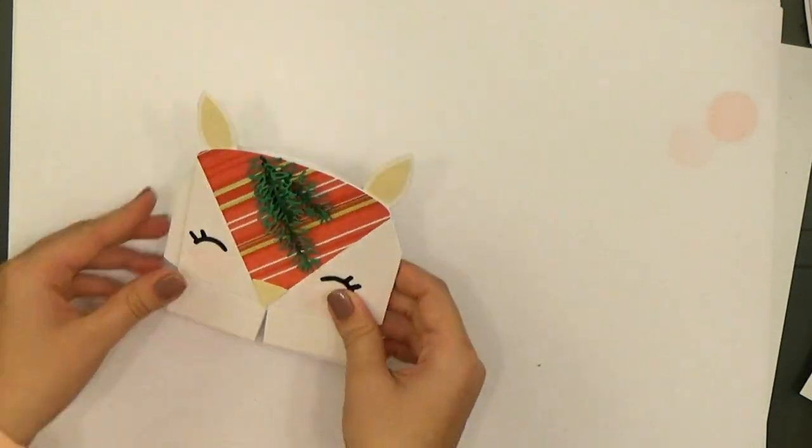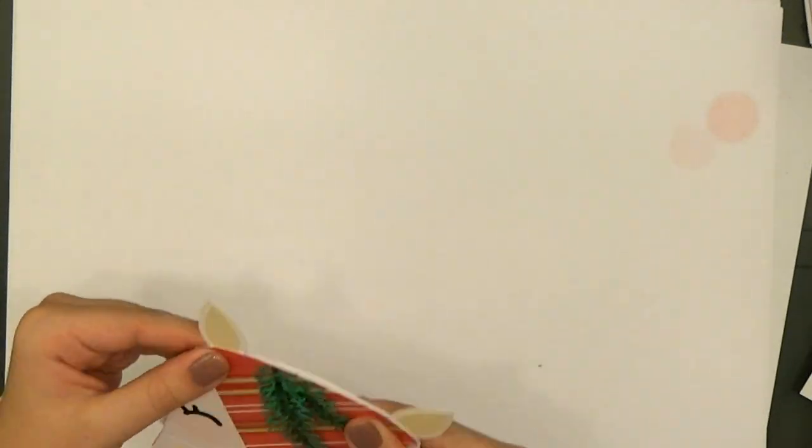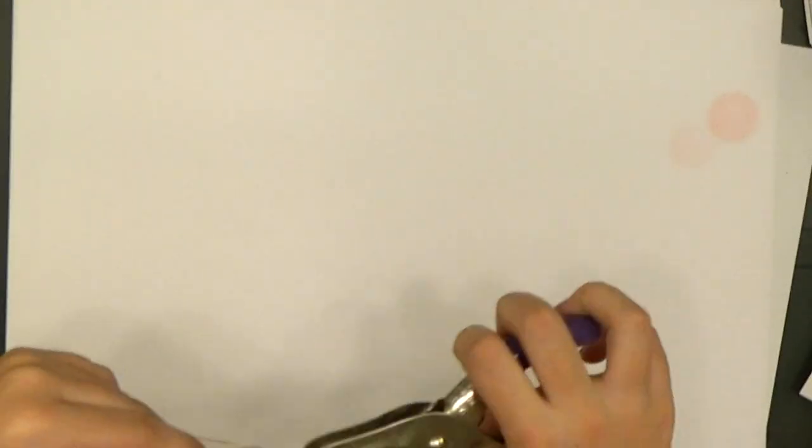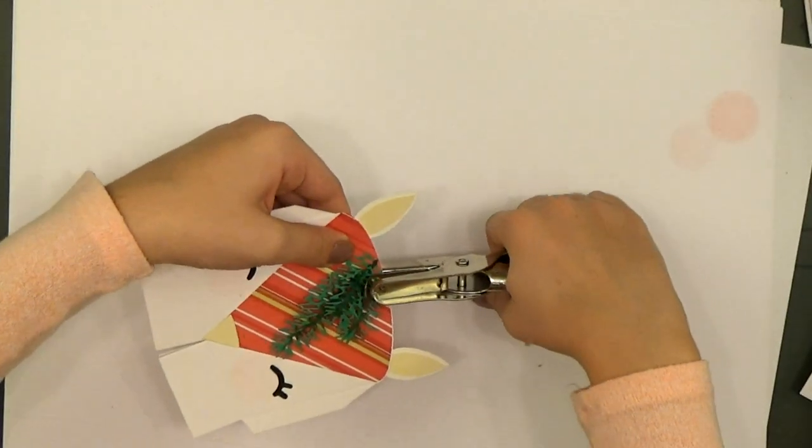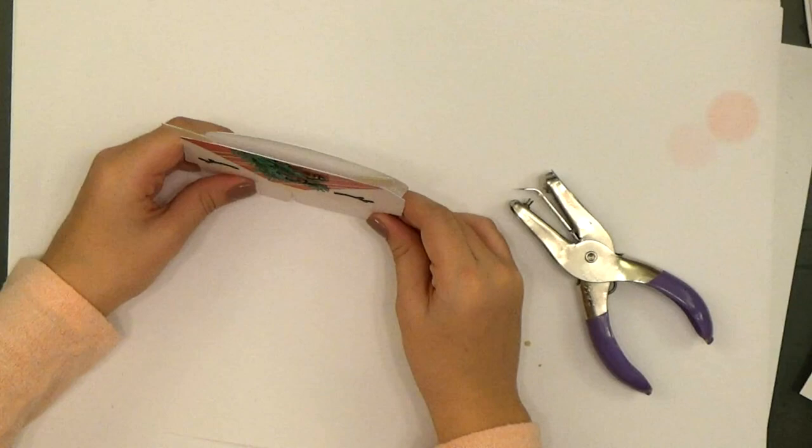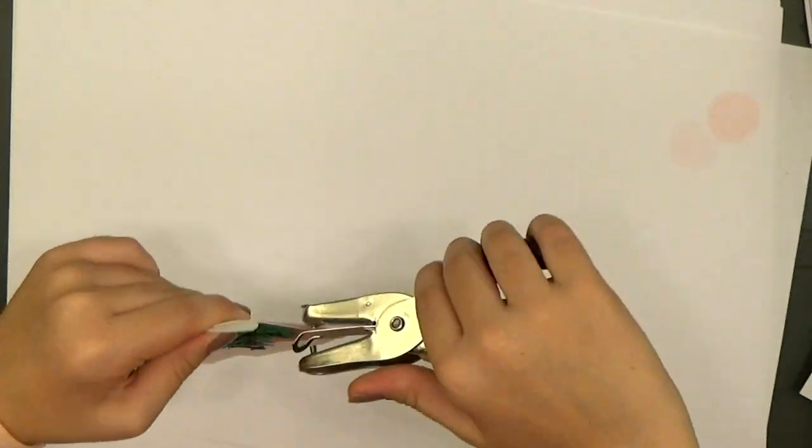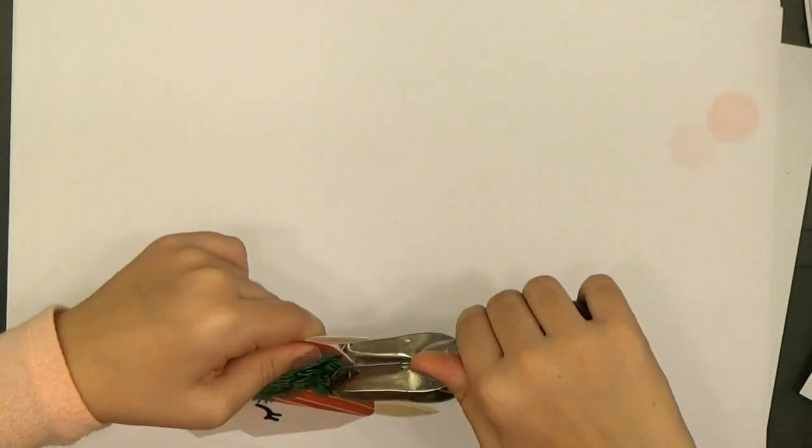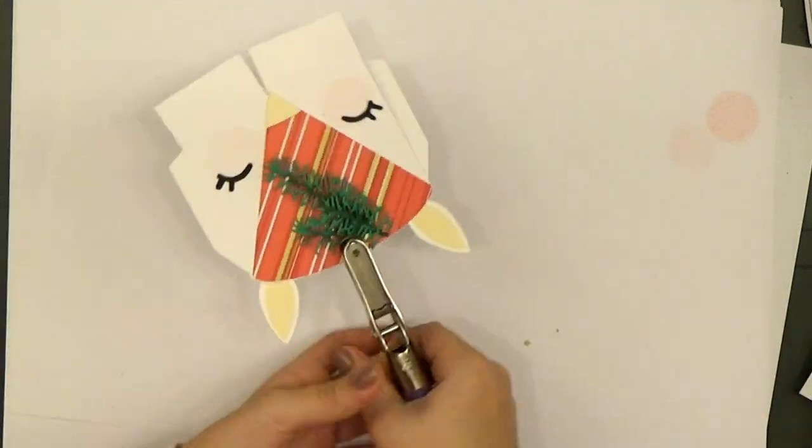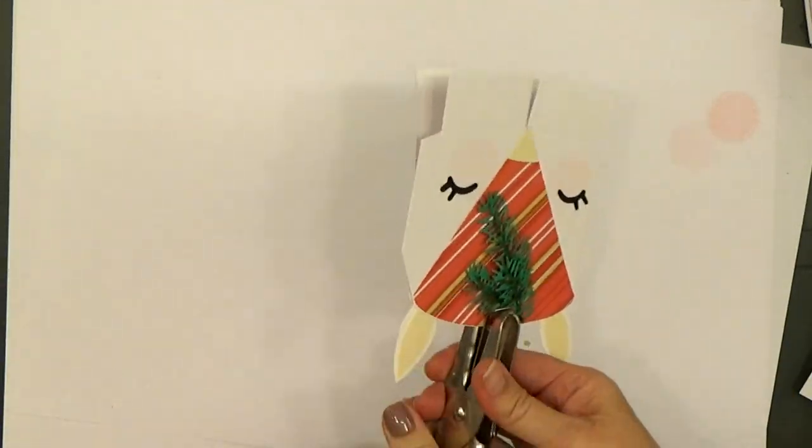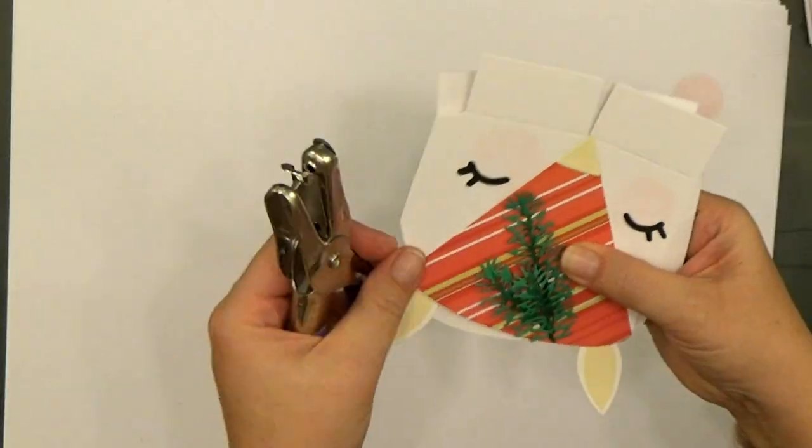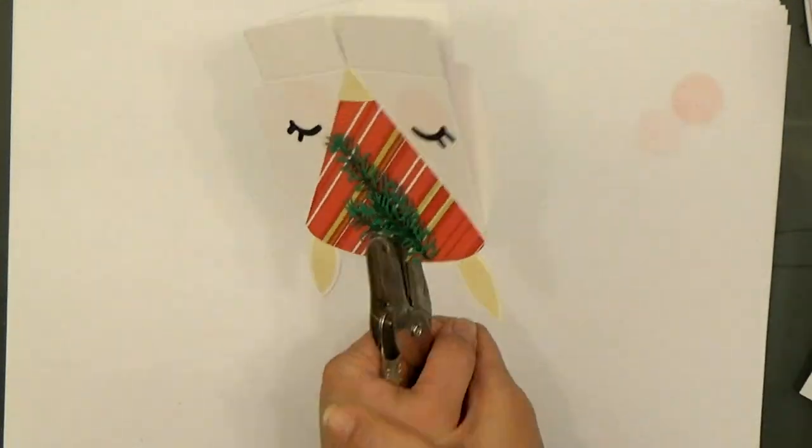Before we assemble the box, we're going to need to punch holes at the top and add our ribbon pull cords. At this point the cardstock and all the patterned paper layers are pretty heavy here, so Kelly was struggling. I stepped in and helped her punch that out a little bit there.